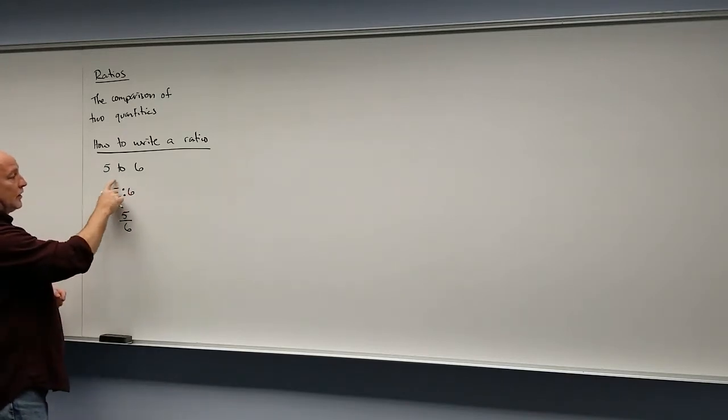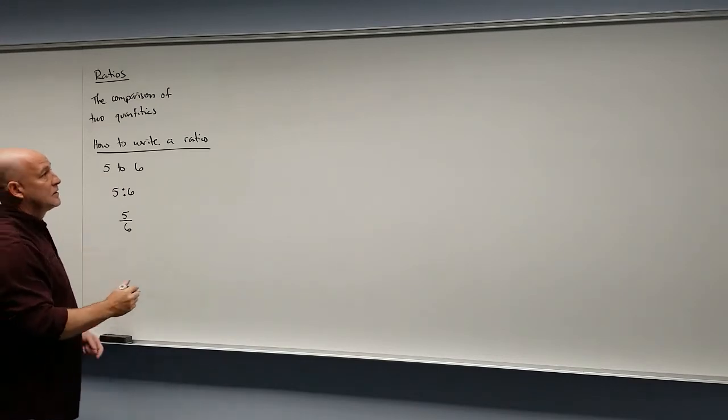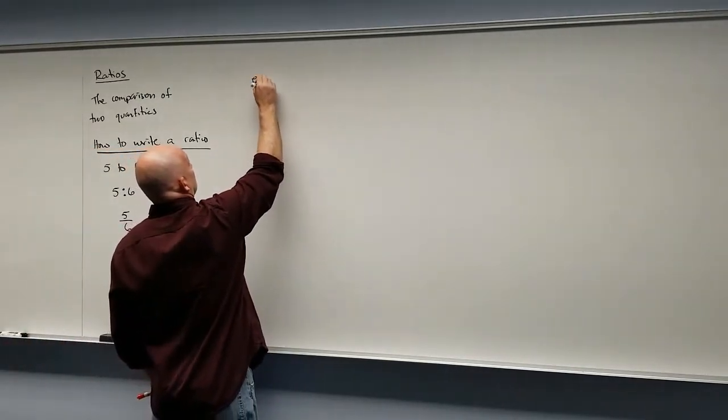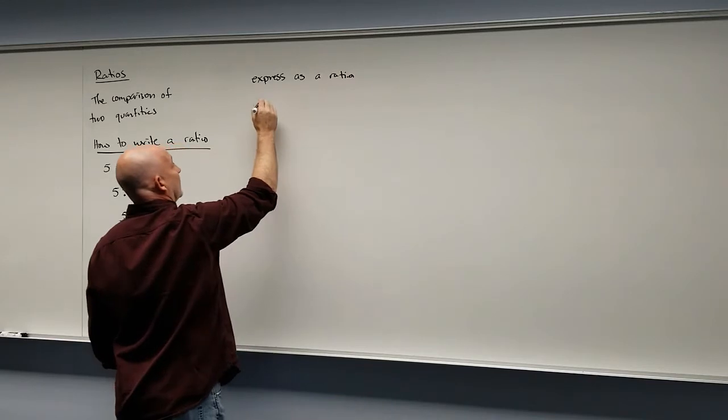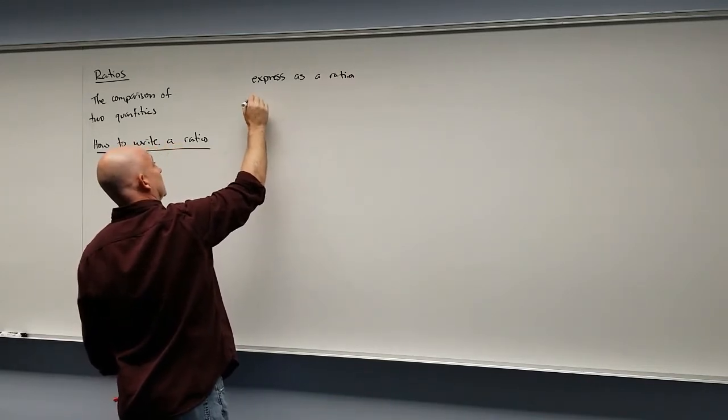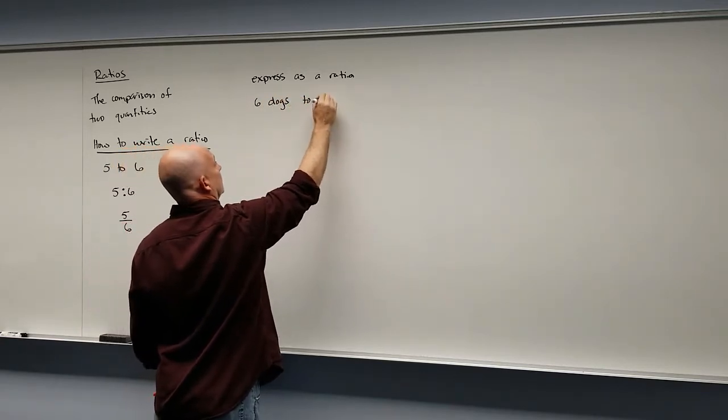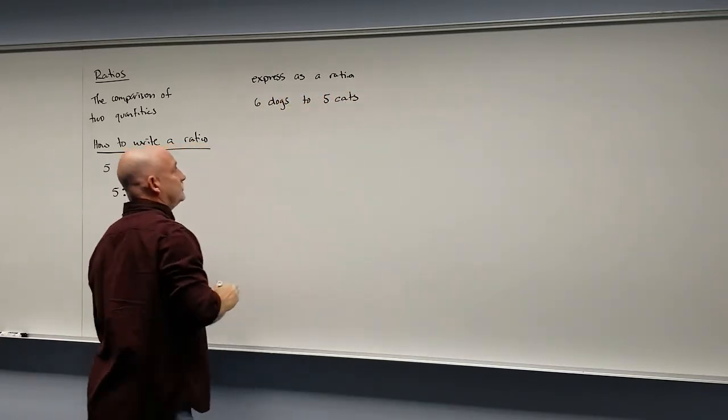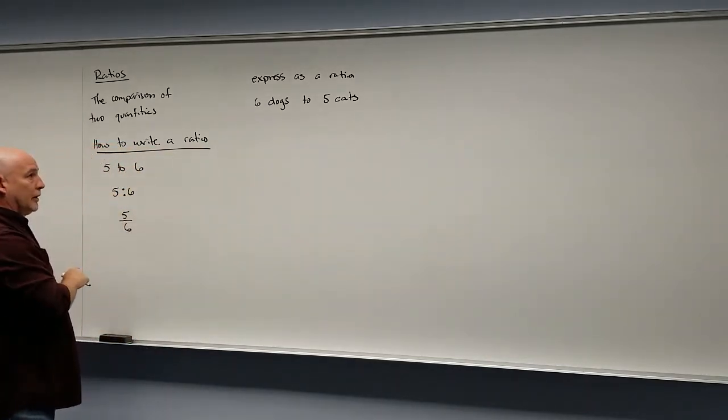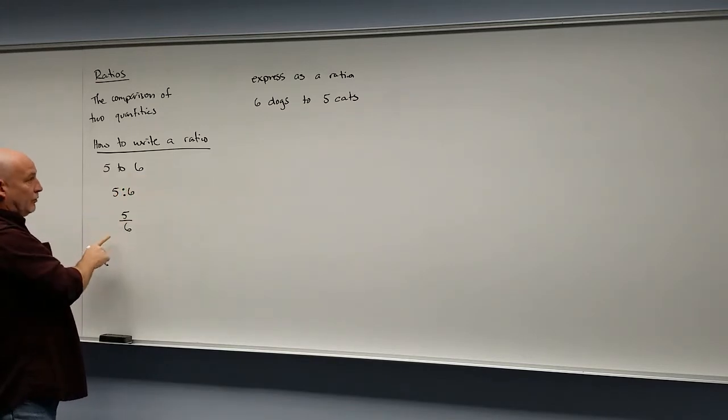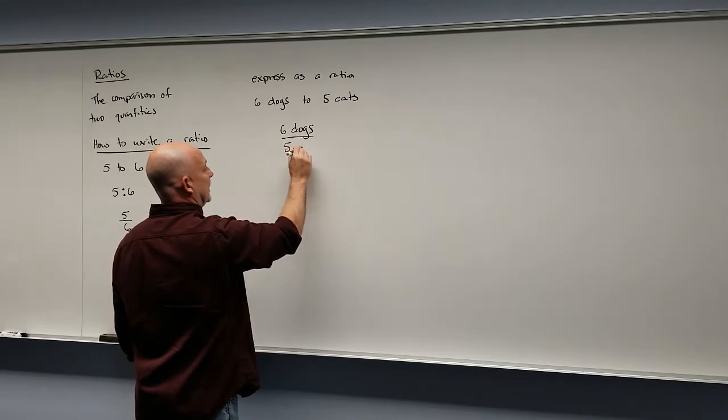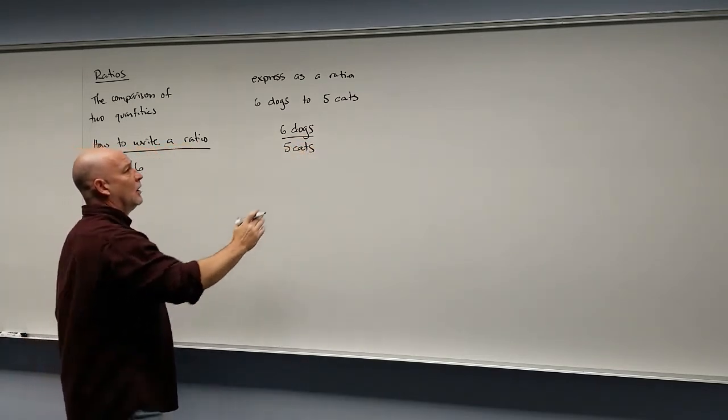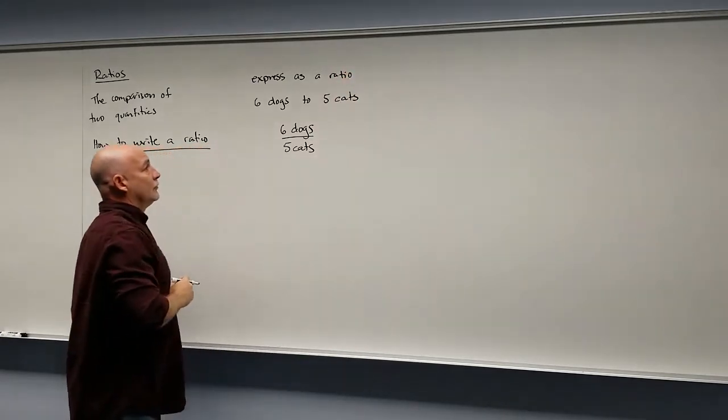So a ratio just shows the comparison of two different quantities. So if I said express as a ratio, express six dogs to five cats. Now notice our relationship. I kind of changed the numbers around a little bit. We have dogs to cats. So if we write this as a ratio or as a fraction, the first one goes on the top, the second one goes on the bottom. So this would be six dogs to five cats. So that would be our ratio or our fraction of those two quantities.